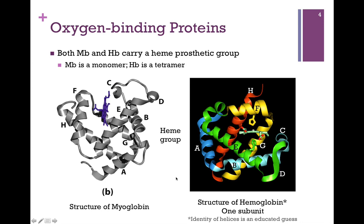Now, if we compare that with the structure of hemoglobin on the right, we see a very similar structure. Keep in mind, hemoglobin is a tetramer, and so we're only looking at one of its subunits here. It also is primarily alpha helical — it has eight alpha helices arranged in a similar way, and we'll compare these in more detail in a later video. I should point out that in this figure from the web, I took my best educated guess on labeling those helices, but I'm pretty sure it's right. At least you can see the structure is very similar.